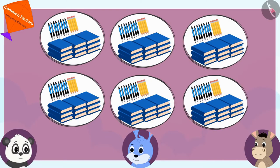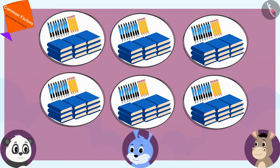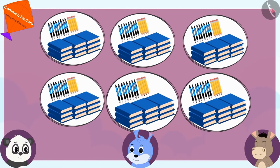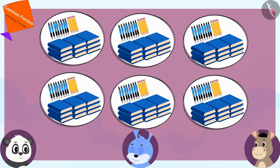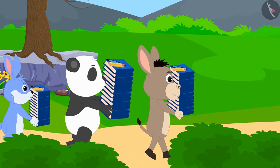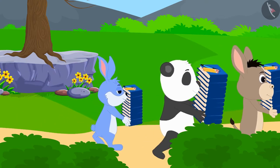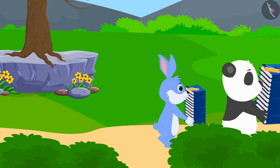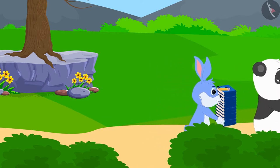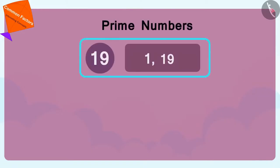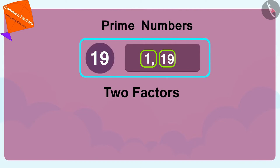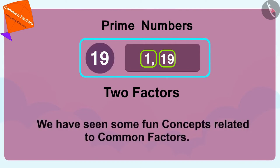In this way, Golu, Bunny and Bola formed 6 groups of all those items, and excitedly they went out to deliver them to the needy children of the village. Children, in this video we have seen some fun concepts related to common factors.